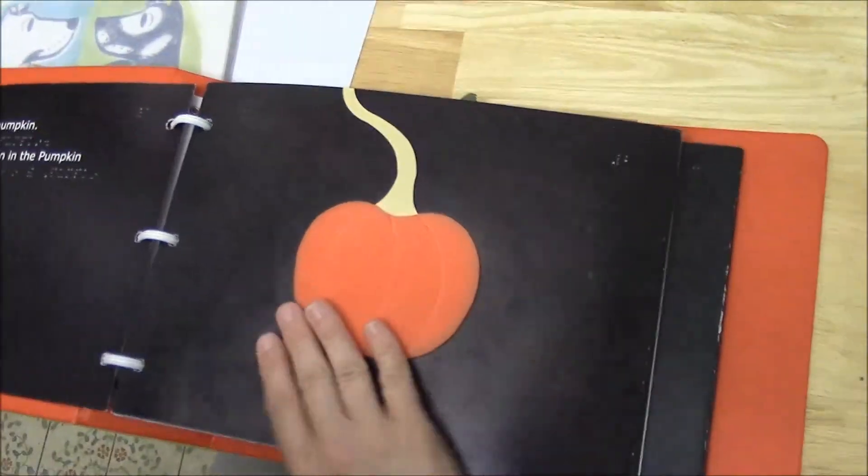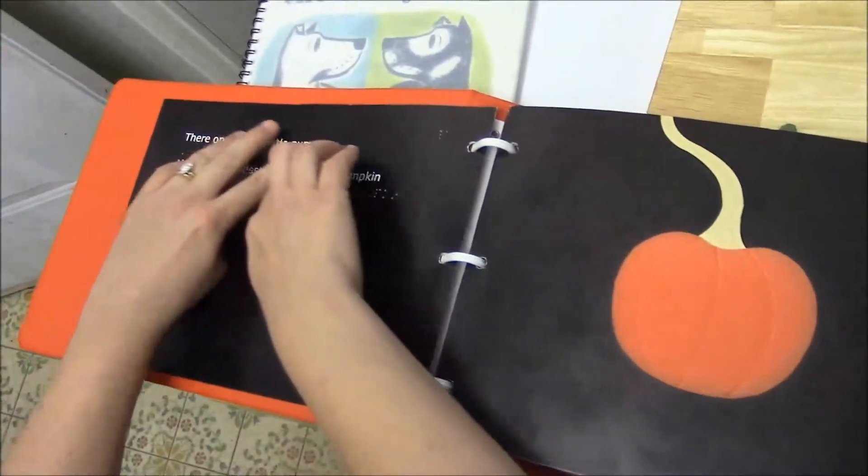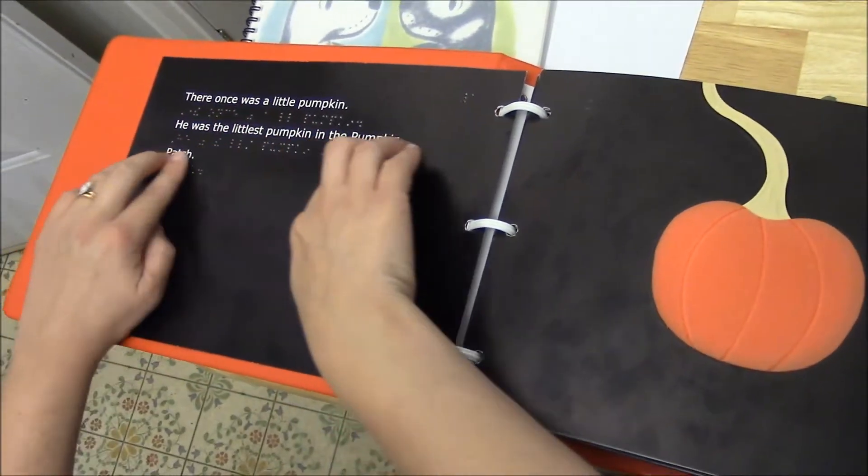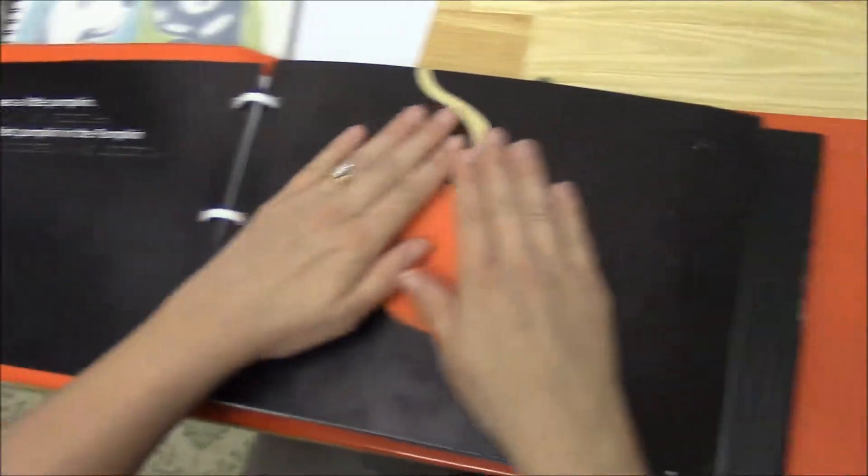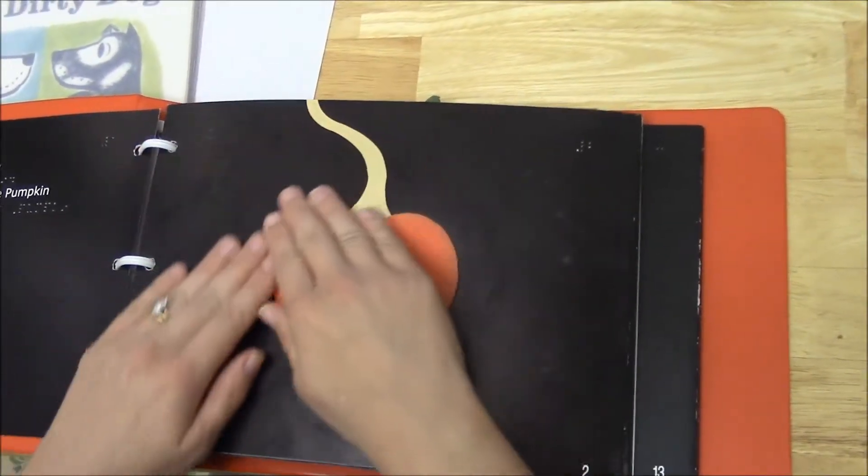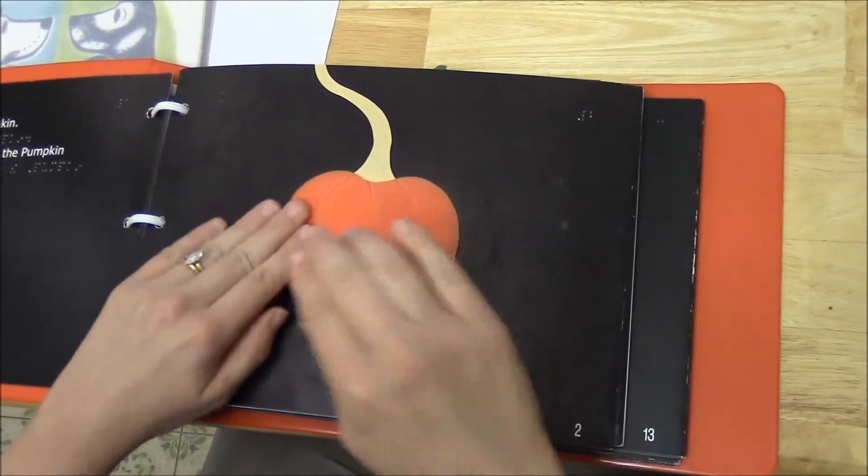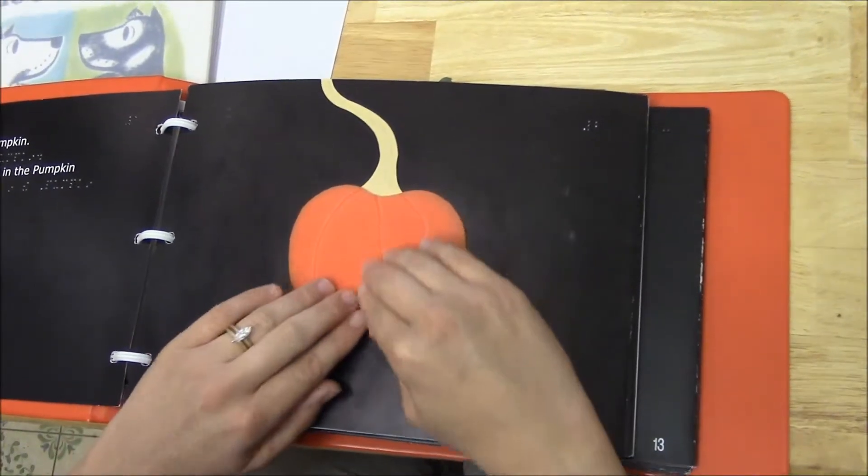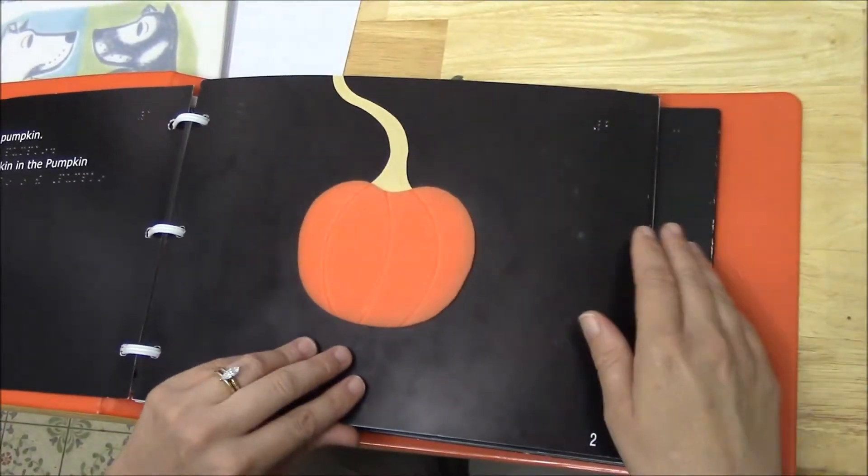All right, so here it starts. It says there once was a little pumpkin. He was the littlest pumpkin in the pumpkin patch, and right here the kids would feel the pumpkin. Here's the stem, and here's the little pumpkin. They even do the little ridges on the pumpkin, so you can see how intricate and real they try to make it.